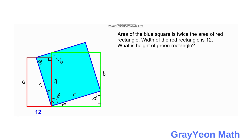Next, we apply the Angle-Side-Angle congruence theorem. Focusing on the two triangles: angles alpha and beta are congruent, and side C — which is the side of the square — is congruent. Therefore the two triangles are congruent, and this side of the green rectangle is also A.